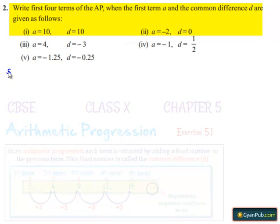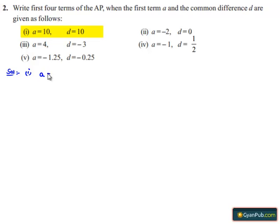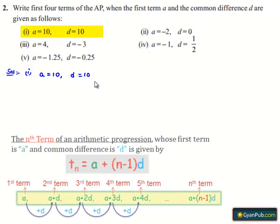Now moving on to the solution for the first bit. Here, the first term a is given by 10 and the common difference d is given by 10 again. We know that in AP,